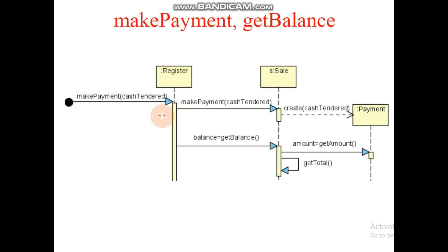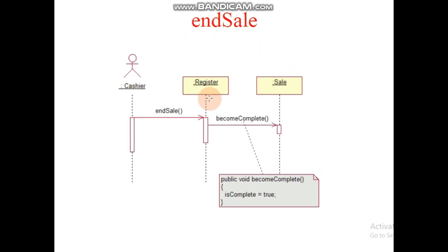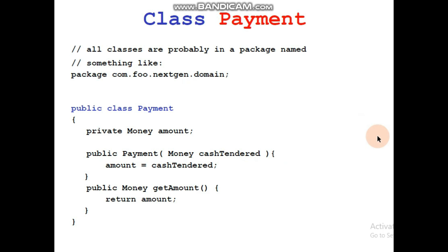For making payment, the message gets the amount and then getTotal. For the end of sale, the cashier sends becomeComplete to the sale via register. Here is a class definition: public void becomeComplete — this function is written with a statement: boolean isComplete equals true. When this is true, the value is passed further within the function.